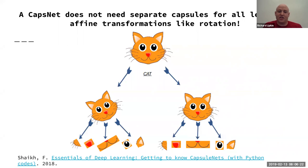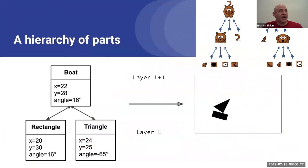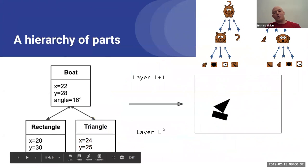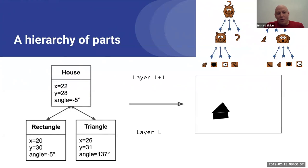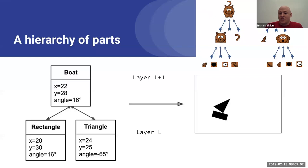An important feature of CapsNets is that they represent a hierarchy of parts. If we have rectangle and triangle capsules in layer L, then in layer L+1 we might have a boat capsule if they are at a certain orientation that agrees with each other. We can also see a hierarchy of parts for cats and dogs. And if we have a house, then we will have a different hierarchy of parts, even if we have the exact same size of rectangle and triangle — we'll be able to describe the location and orientation of the house or a boat depending on the respective relationships between the parts.